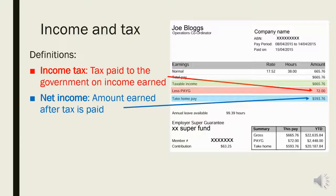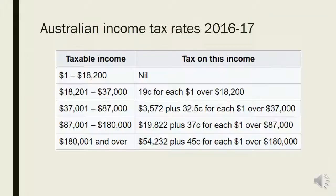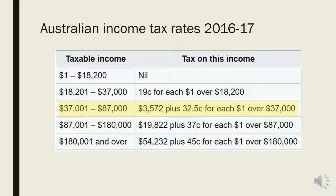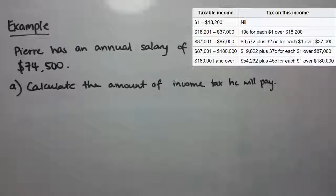Their take-home pay — that's their net income — is almost $600. This table gives us the Australian income tax rates, the most recent ones for this financial year, which you can find on the internet. If you make less than $18,200 you don't pay any tax at all. The next bracket up, you pay 19 cents for each dollar you make over that minimum. The next bracket, where a lot of people sit, you pay a base amount of $3,572 plus 32.5 cents for every dollar over $37,000. It keeps going up, with the highest tax bracket being $180,000.